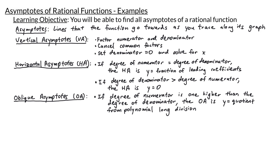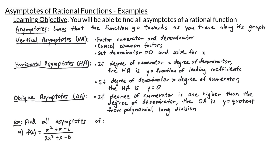Now that we know how to find these asymptotes, let's get some practice with examples. In example A, we want to find all asymptotes of the rational function f equals x squared plus x minus 2 divided by 2x squared plus x minus 6.